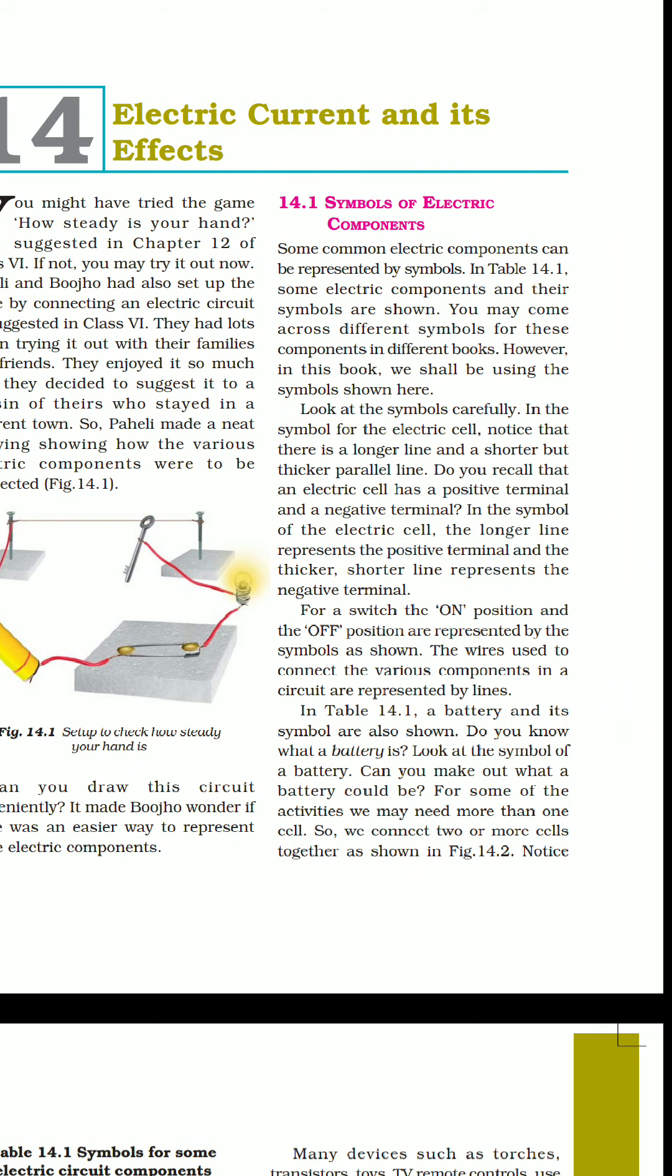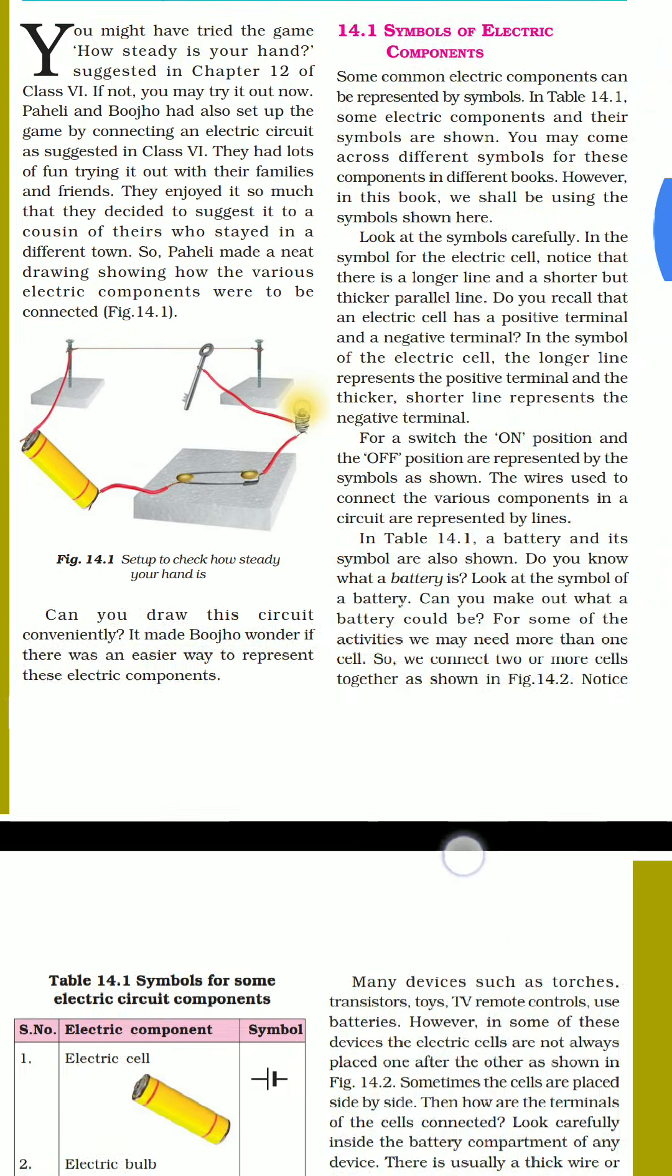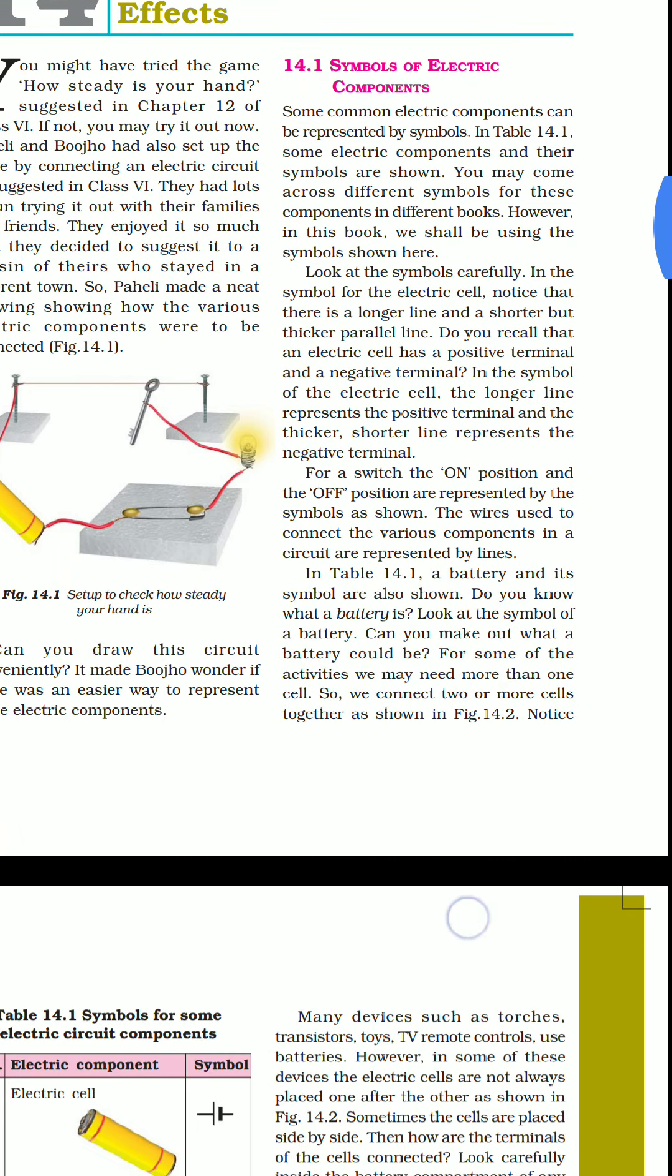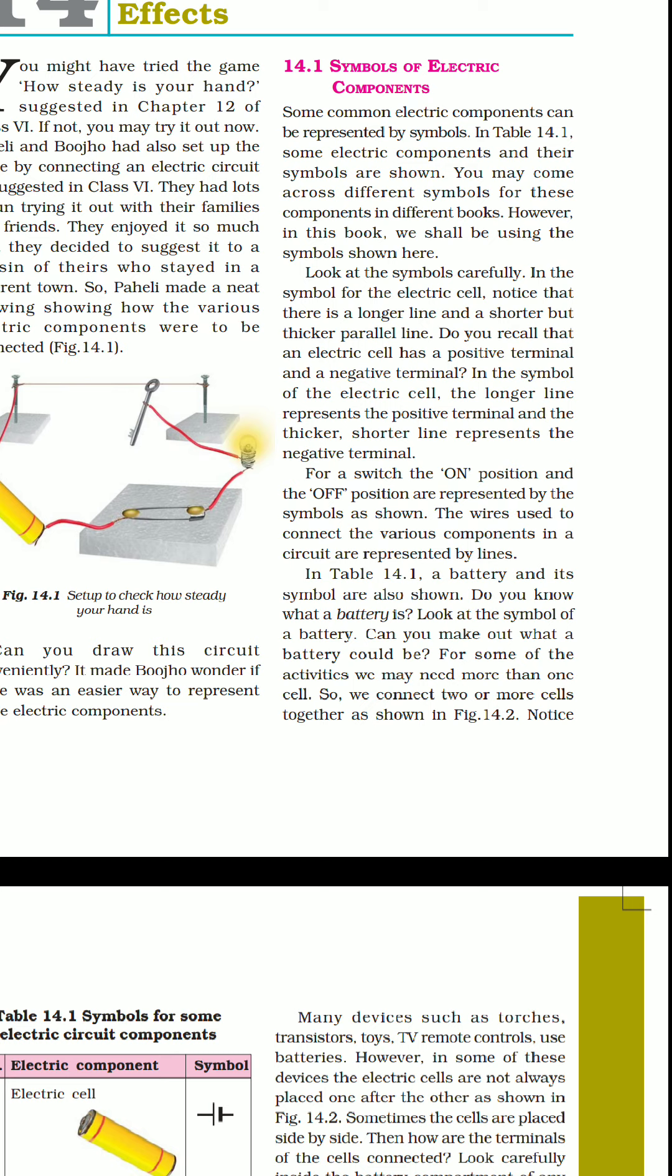It was a simple symbols of electric components. Some electric components can be represented by symbols. In Table 14.1, any electric component can be shown as symbols. If you see that it is a cell, then you will know that it is a cell.